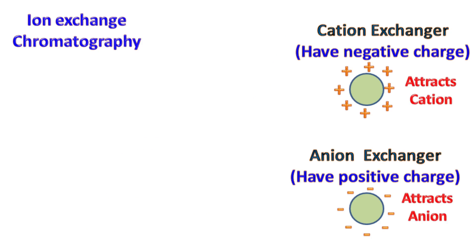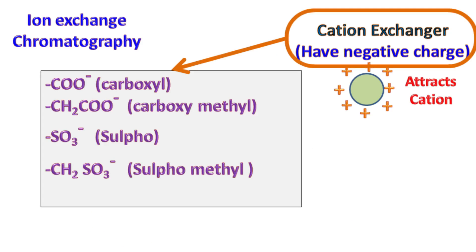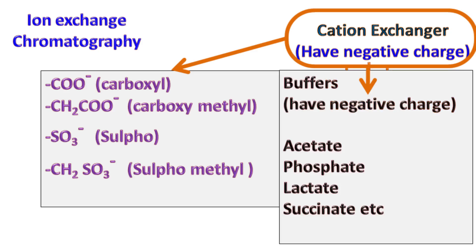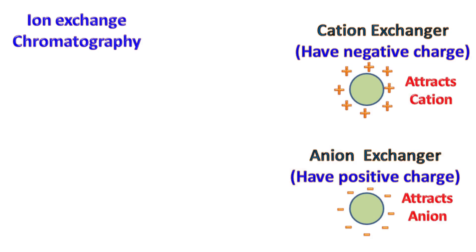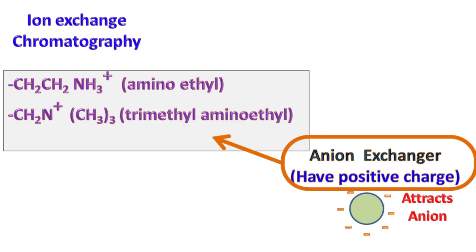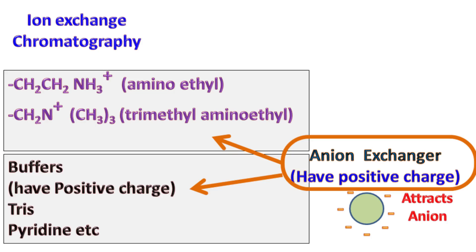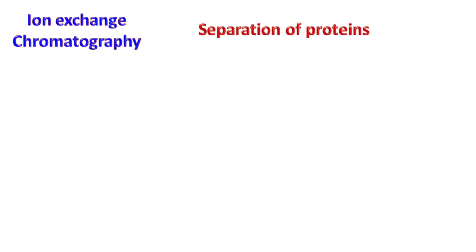Different functional groups such as carboxyl, carboxymethyl, sulfo, sulfomethyl, etc. can be used as a cation exchanger. Buffers having negatively charged ions like acetate, phosphate, etc. can be used with the cation exchanger. On the other hand, functional groups like amino ethyl, trimethyl amino ethyl, etc. can be used as an anion exchanger. The buffers used with the anion exchanger have a positive charge, for example, Tris buffer.